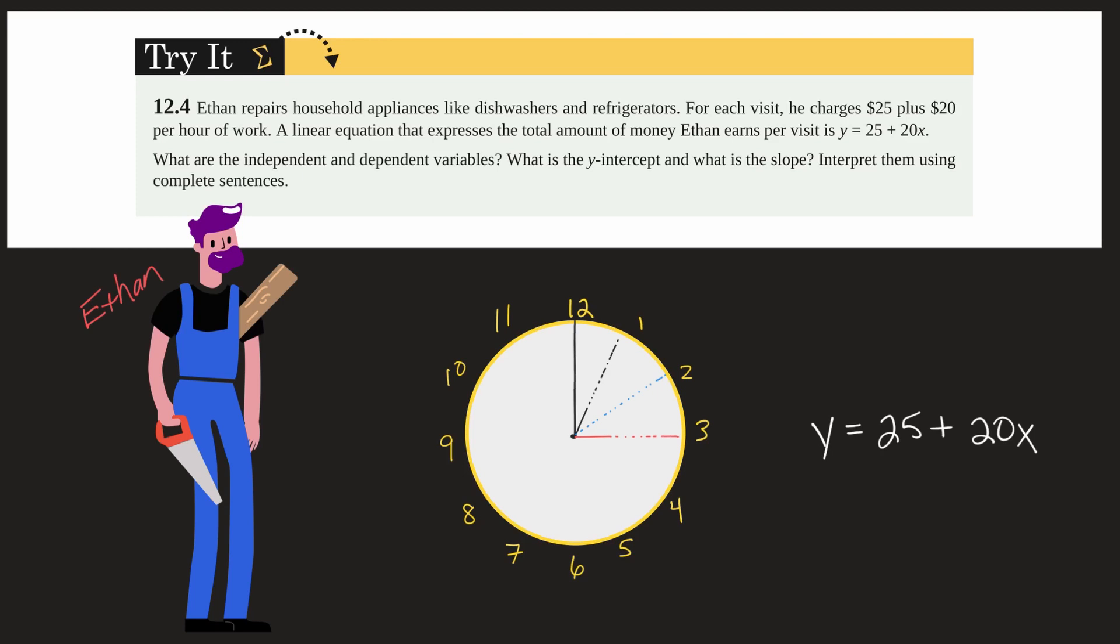So this has happened to me here in my own house. So Ethan shows up and that's automatically $25. So we'll start here at 12 o'clock and assume he starts working at 12. And then for each hour he works, it is $20 on top of that.